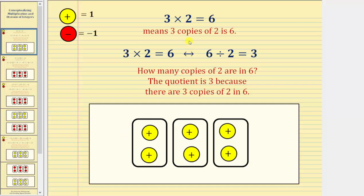Now that we understand this product, every product has a corresponding quotient. 3 times 2 equals 6 corresponds to the quotient 6 divided by 2 equals 3. 6 divided by 2 is asking: how many copies of 2 are in 6? The quotient is 3 because there are 3 copies of 2 in 6, which we can verify from the model below.